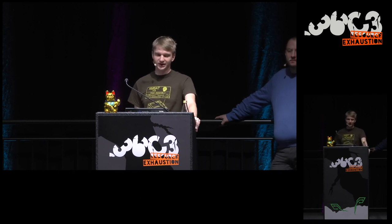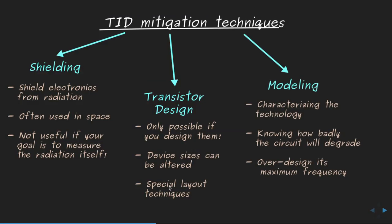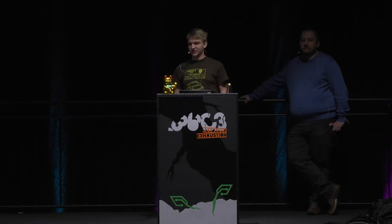Since shielding isn't viable in particle accelerator environments, other methods are used. Designing custom integrated circuits gives freedom at the transistor level: transistors can be made larger to withstand greater doses, and special layout techniques — experimentally verified to be more radiation-resistant — can be applied. The most important mitigation is modeling: characterizing the effects radiation will have on a transistor so that the circuit can be over-designed to operate at a higher frequency and still function sufficiently at the end of its expected lifetime.